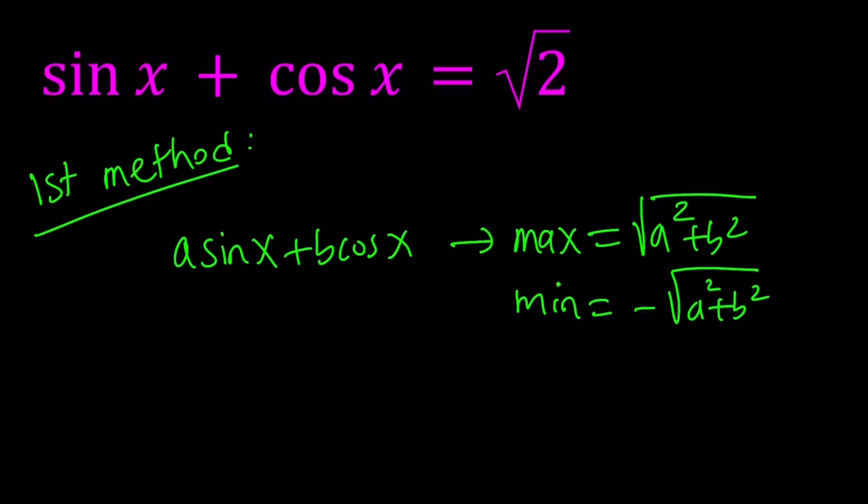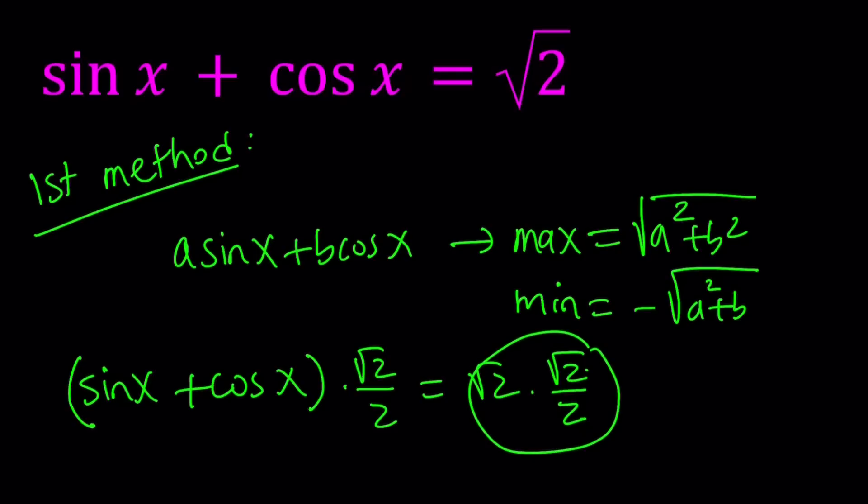I'm going to multiply this expression, and you're going to see why in a little bit, by square root of 2 over 2. When I multiply on the right hand side, this becomes 1 because root 2 times root 2. I'm going to distribute this: sine x times root 2 over 2 plus cosine x times root 2 over 2 equals 1. Awesome.